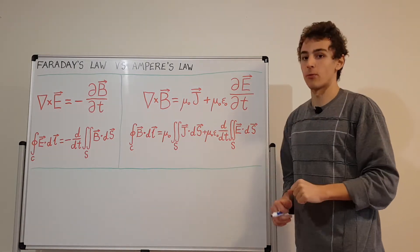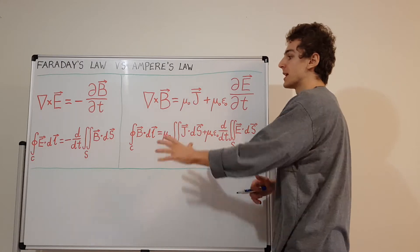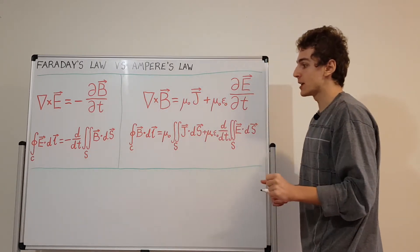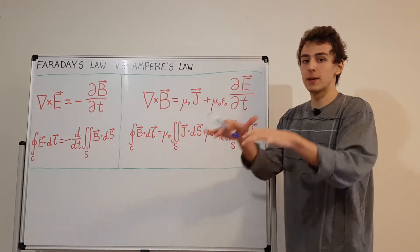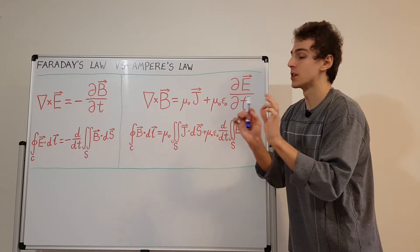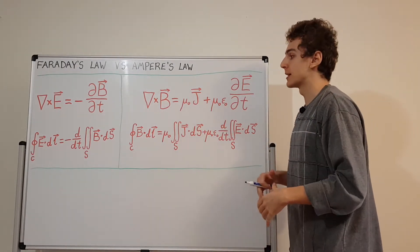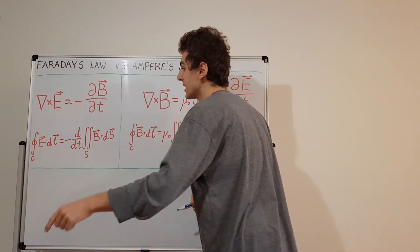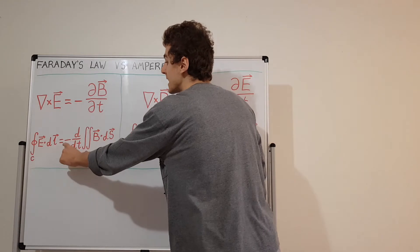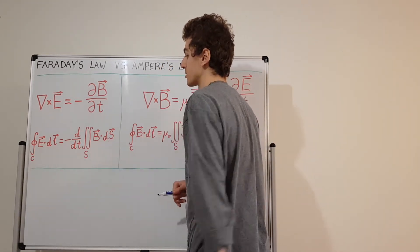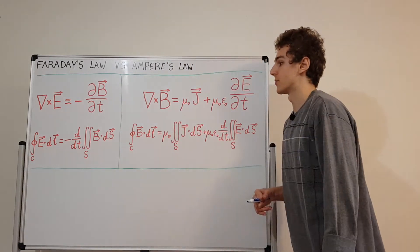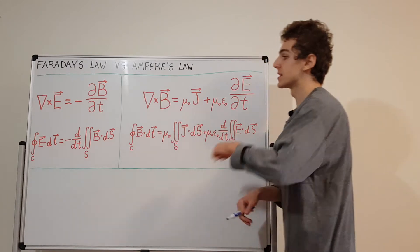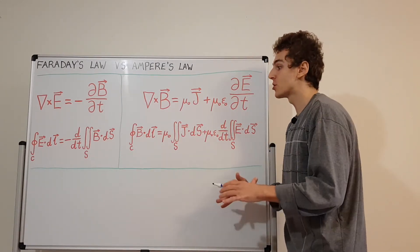Now let's look at the integral forms. Both have a line integral around a closed curve C, which is the boundary of a surface S — like a membrane bound by a curve. The line integral around C of the electric field equals the negative time derivative of the surface integral across S. That surface integral is the magnetic flux through S, and if that flux is changing with time, we take the negative of that to get the circulation around the boundary curve C.